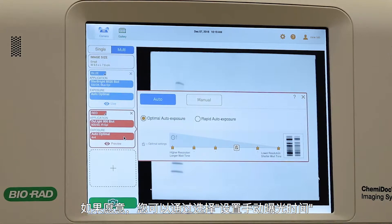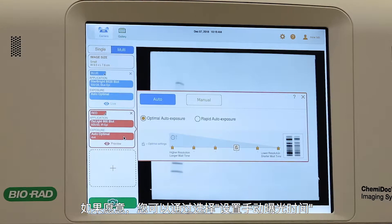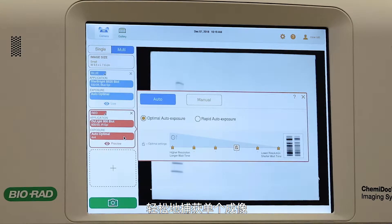If you prefer, you can easily capture a single image by selecting Set Manual Exposure Time. To accommodate low-light quantitative assays, such as near-infrared dyes, additional options are available in the Exposure menu.